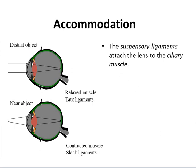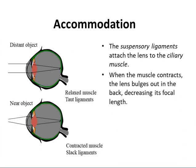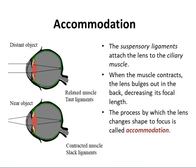Accommodation: the suspensory ligaments attach the lens to the ciliary muscle. When the muscle contracts, the lens bulges out at the back, decreasing its focal length. The process by which the lens changes its shape to focus is called accommodation. Changing the shape of the lens alters how much light is refracted, ensuring light is focused on the retina rather than in front of or behind it. When focusing on a distant object, the ciliary muscles relax, the suspensory ligaments are pulled tight, and the lens is pulled thin and only slightly refracts light. When focusing on a near object, the ciliary muscles contract, the suspensory ligaments loosen, and the lens becomes thicker and refracts light more strongly.